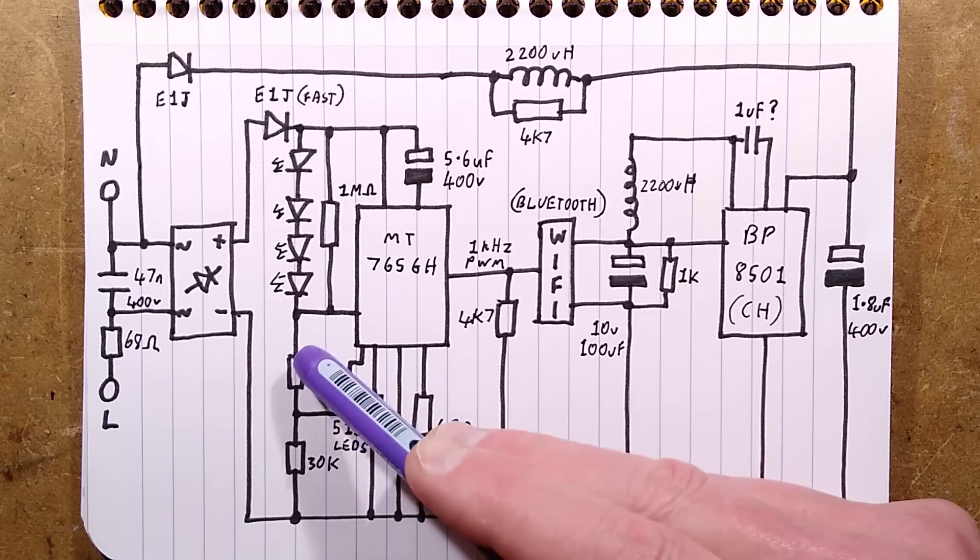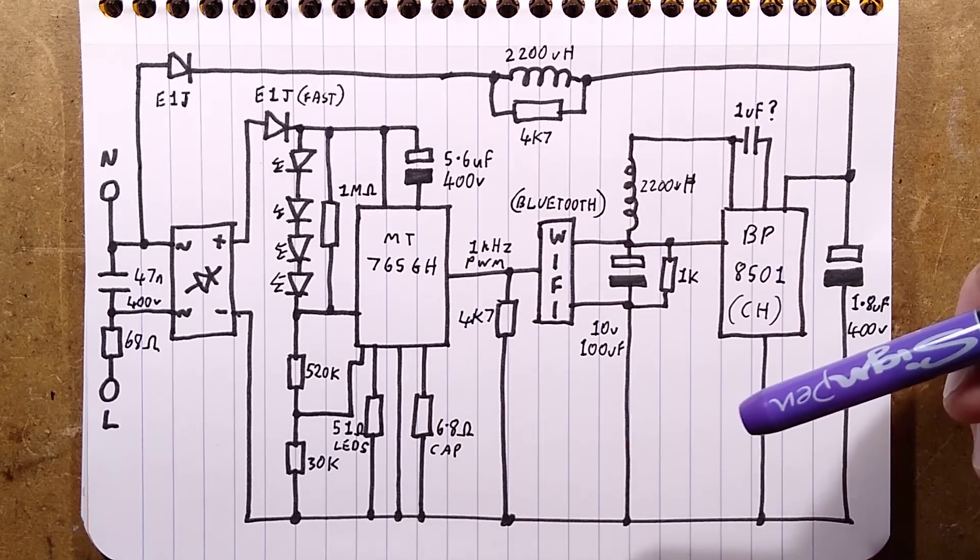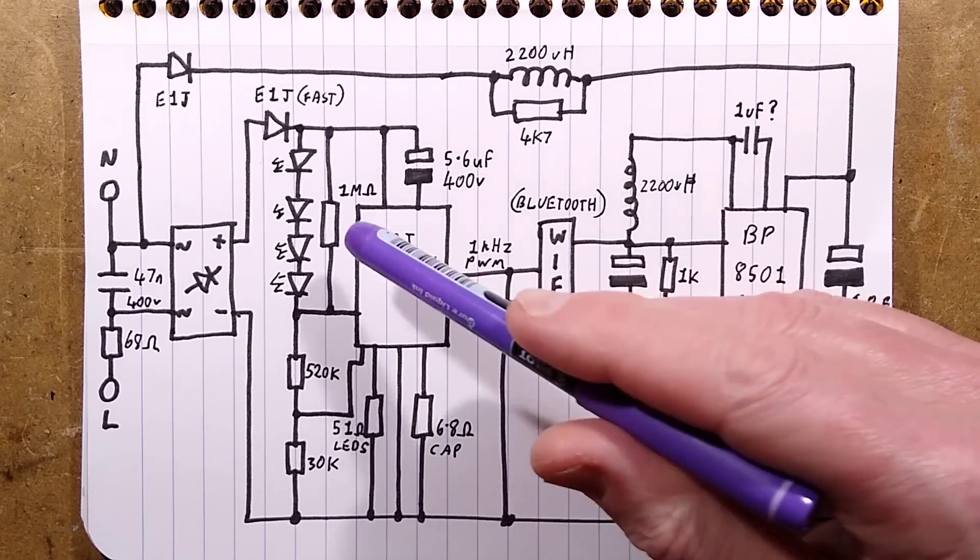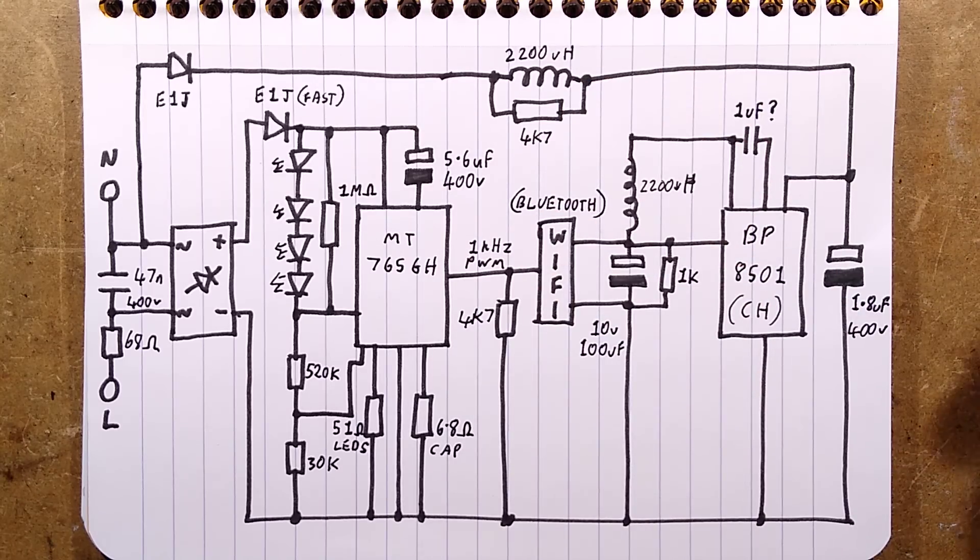Anything else worth mentioning? There's a little feedback circuit. Really don't know what that's for. Is it for measuring a high open circuit voltage across the LEDs? Could be. It might be an open circuit, an over-voltage thing to stop them burning up inside if one goes open circuit. But that is it.